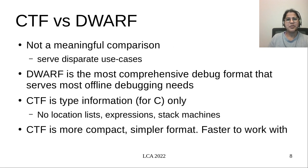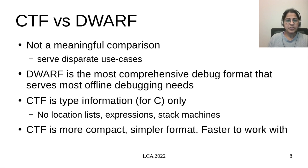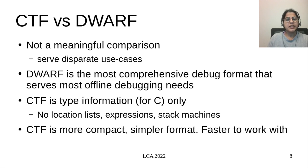Because CTF and Dwarf are both debug formats, the question of how they compare does come up. My opinion is that this is not a meaningful comparison — CTF and Dwarf serve different use cases. Dwarf is the most comprehensive debug format serving the needs of most offline debuggers. CTF, on the other hand, is type information for C only at this time. It has no location information, no complex expressions to evaluate, hence no stack machine in the reader. CTF is a more compact, simpler format which makes it faster to load.